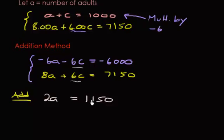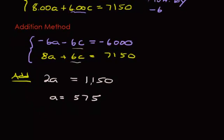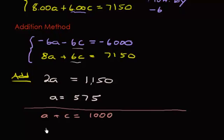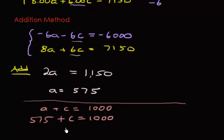To solve for A, divide both sides by 2. The number of adults equals 575 people. Now we need to figure out C. Plug A equals 575 back into one of the equations. The first equation is easiest. If A plus C equals 1,000 and A is 575, then we can solve for C. The number of children equals 425.